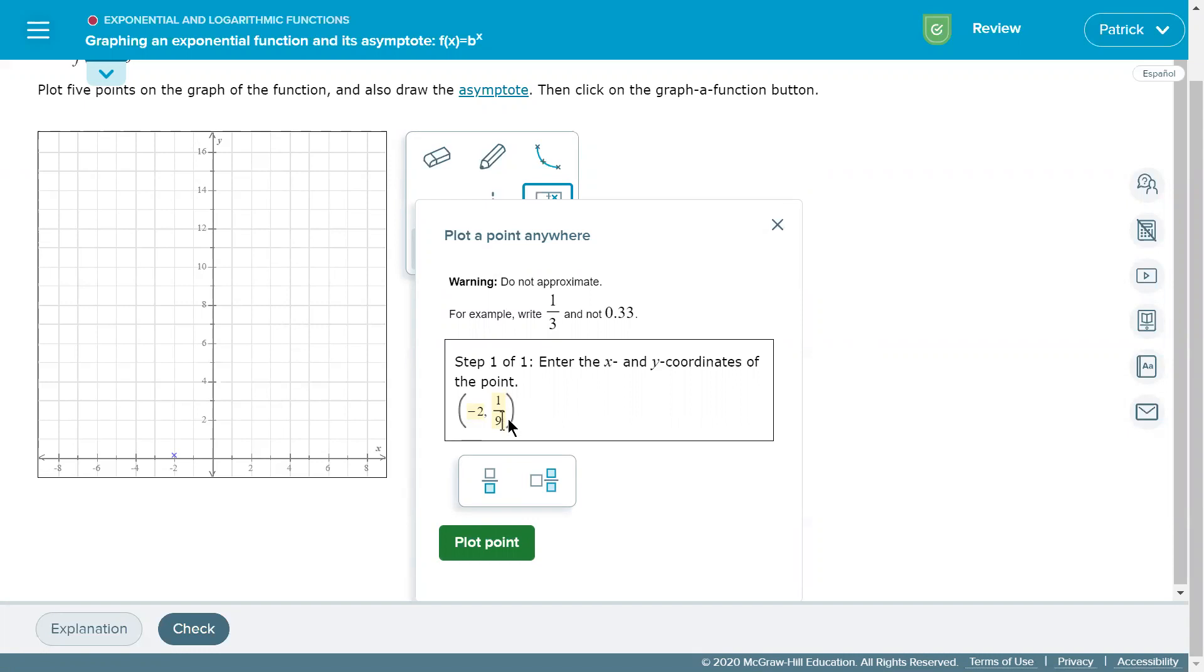I'm just using the slash key on my keyboard 1 slash 9 to get 1/9th. You can also use the fraction bar button down here, and then when I hit plot point, it puts exactly that point on the graph.